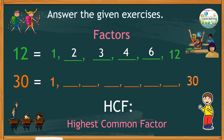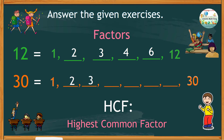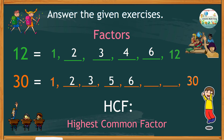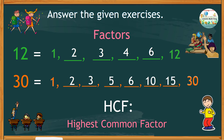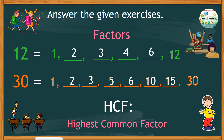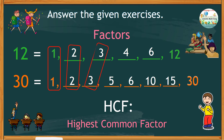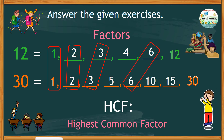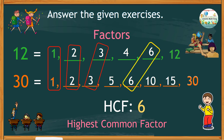The factors of 30 are 1, 2, 3, 5, 6, 10, 15, and 30 itself. The common factors of 12 and 30 are 1, 2, 3, and 6. Among these numbers, 6 is the highest common factor.